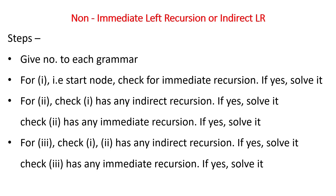Let's say we have been given three grammars. What we're going to do is give a serial number to each grammar: one, two, three. For the first grammar, which is the start node, we check if it has any immediate recursion. If it does, we solve it. For two grammars, we check the first one for indirect recursion and solve it first, then check the second one for immediate recursion.